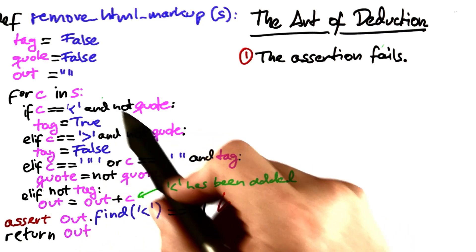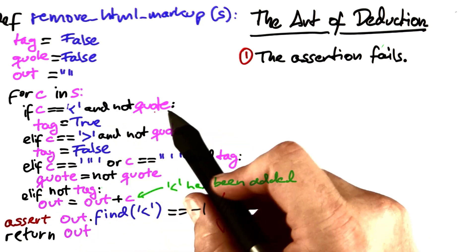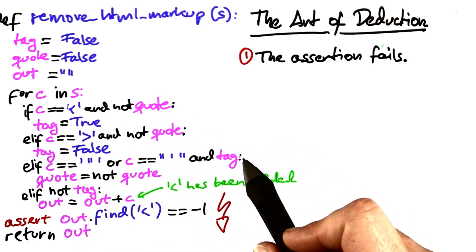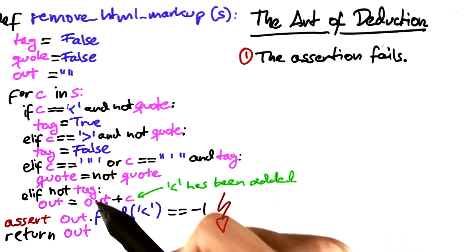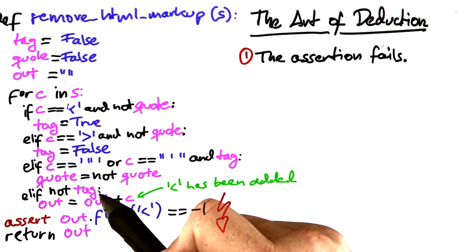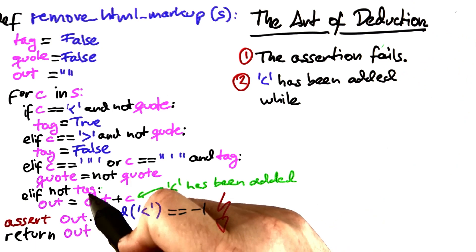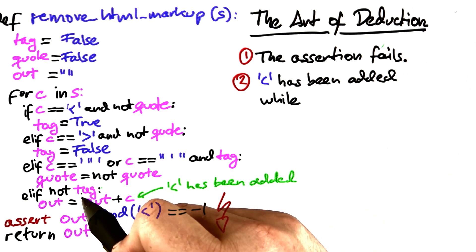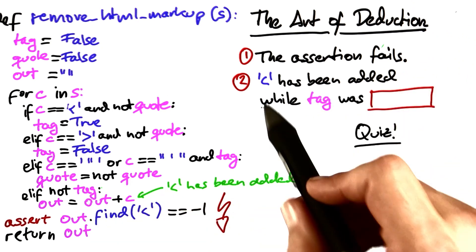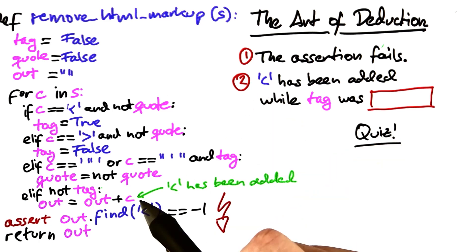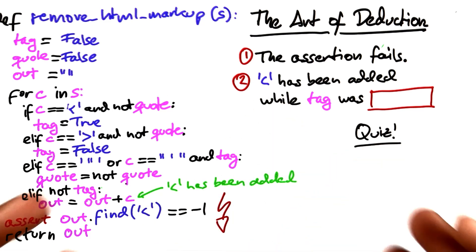In order to reach that line, a number of conditions must be fulfilled. All of these conditions cannot have held, whereas this one must have held. Let's focus on the tag variable here. What was the value of the tag variable when the less than sign had been added over to you?